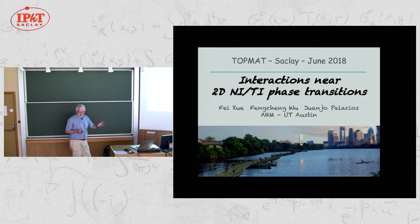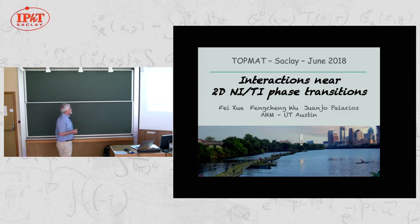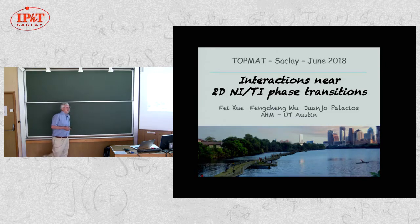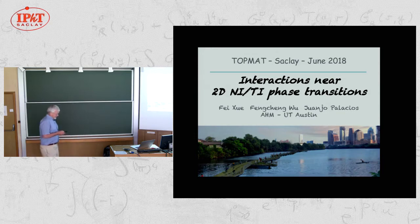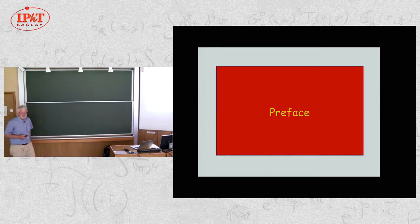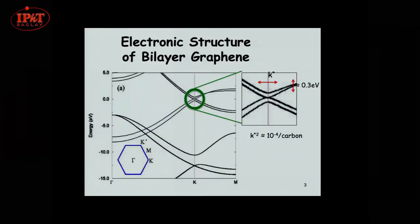Tomorrow we're going to hear about systems in which the topological properties are due to interactions in the first place. This talk is drawn from work by some students: Feng Cheng Wu, now a postdoc at Argonne; Fei Zhu, just leaving to be a postdoc at NIST; and some work I'll mention briefly at the end was done together with a visitor, Juanjo Palapios, from Madrid. I'm going to start with a few remarks about context.